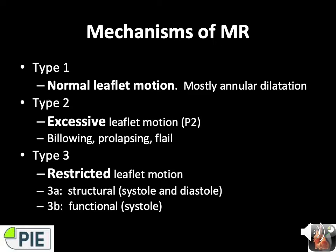Type 3 is restricted leaflet motion with two subtypes: 3A is structural — leaflet affected in both systole and diastole, usually rheumatic disease. 3B is functional — leaflet affected in systole only, due to tethering from LV changes such as dilatation. This can occur with regional wall motion abnormalities or annular or LV dilatation, and is particularly sensitive to loading conditions, seen in ischemia, LV dysfunction, or remodeling.